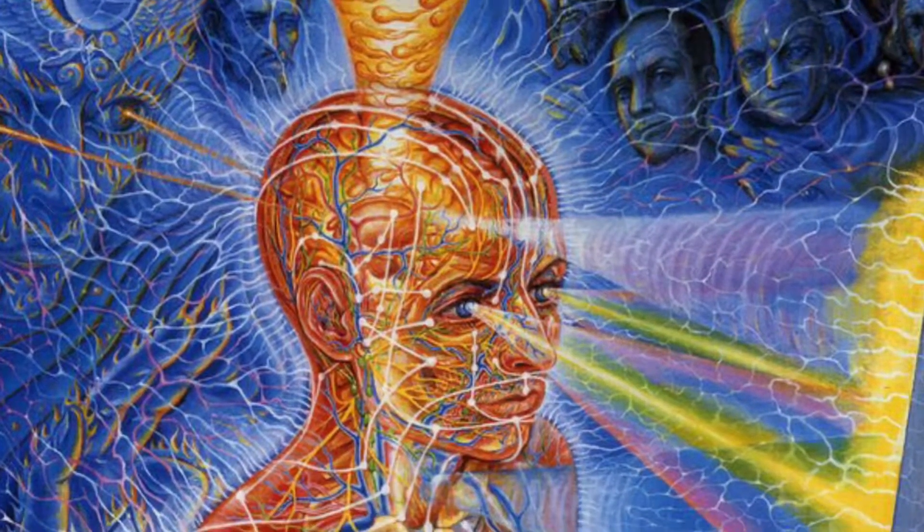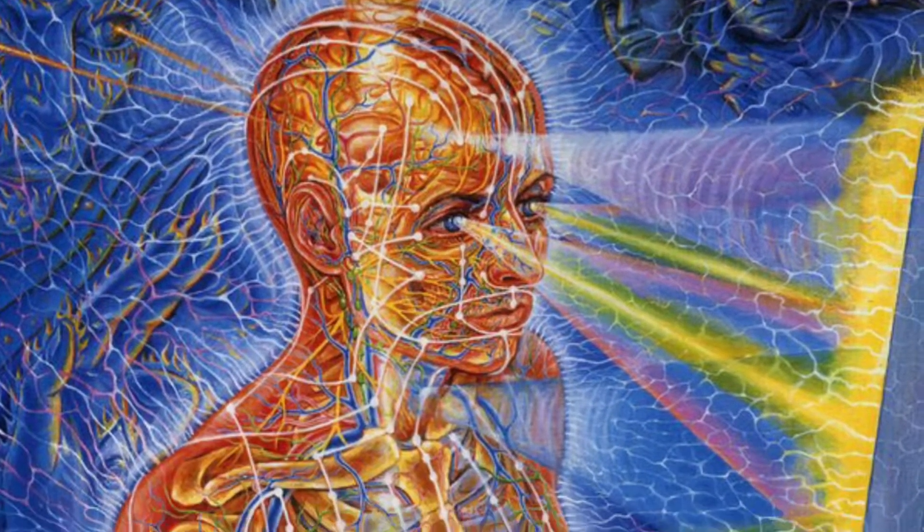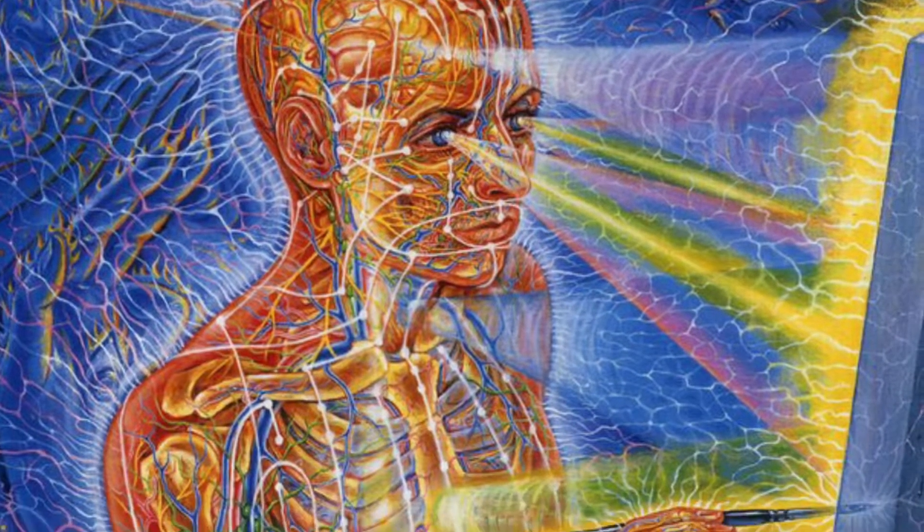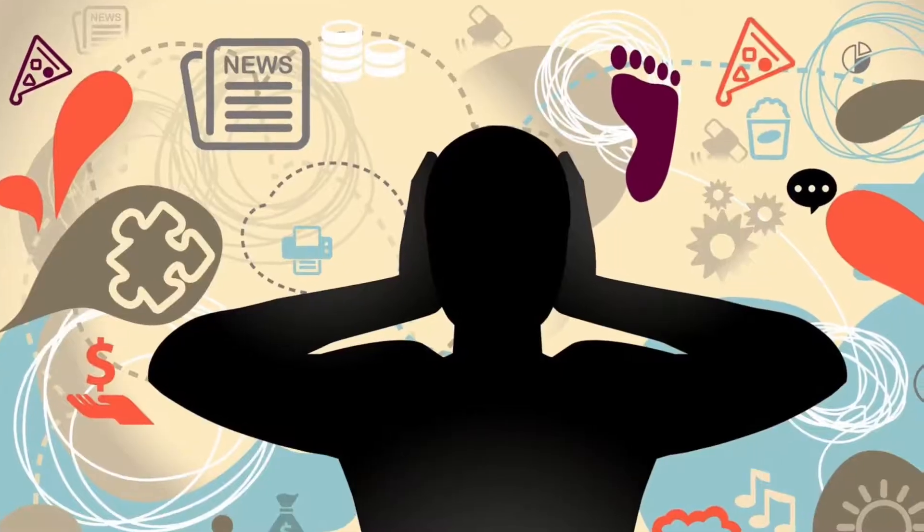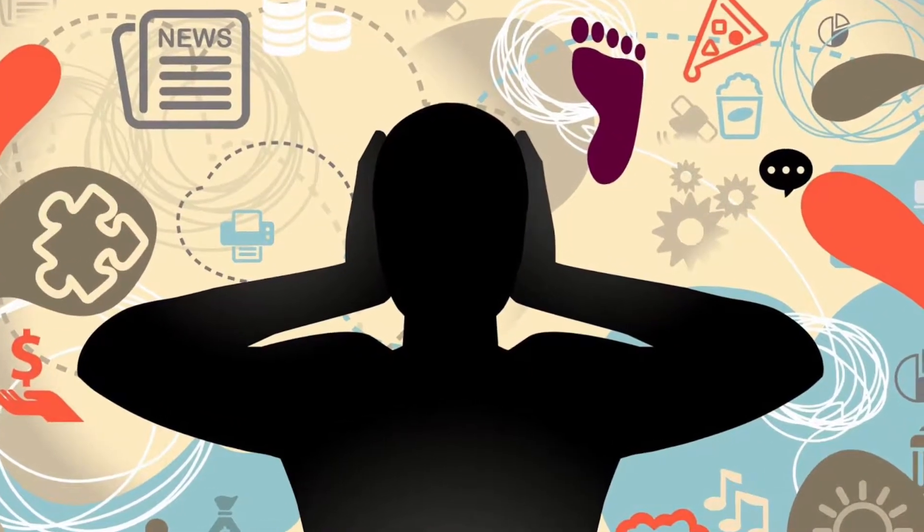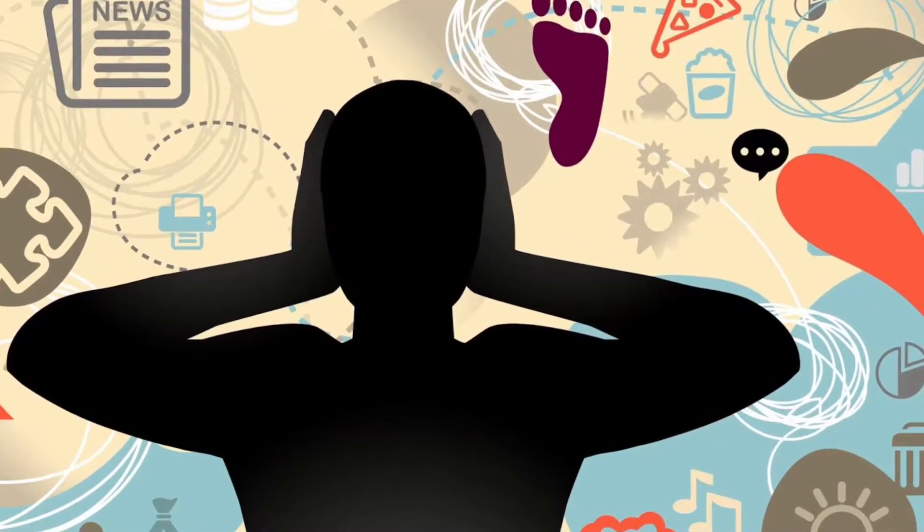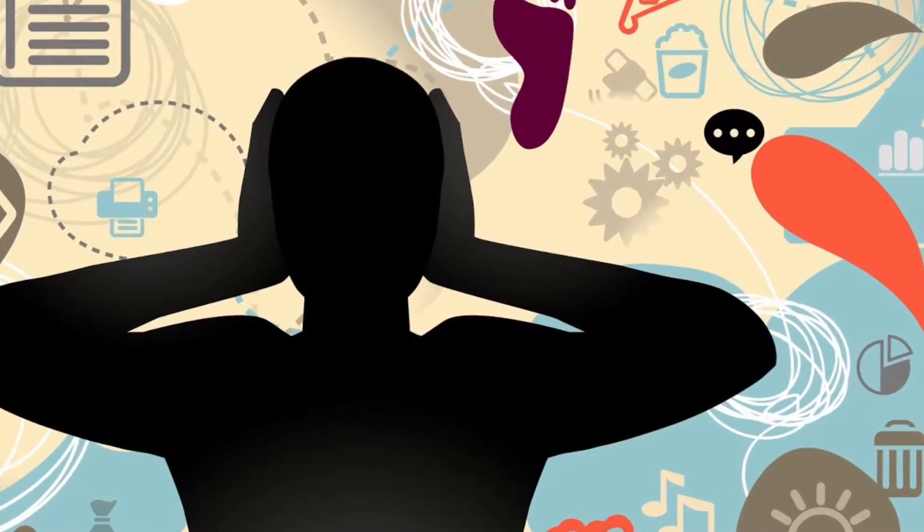Once you lock your focus in, you will be in the zone. This is also called flow state. This is when your ideas and skills are flowing freely onto the page. You will not be able to get into flow state, grow your drawing skills, or produce a worthwhile sketch if you're distracted.